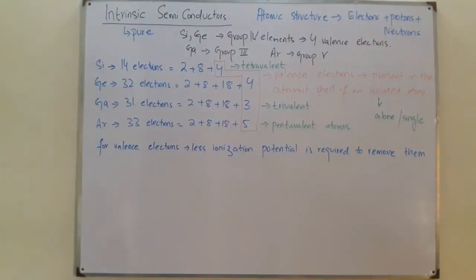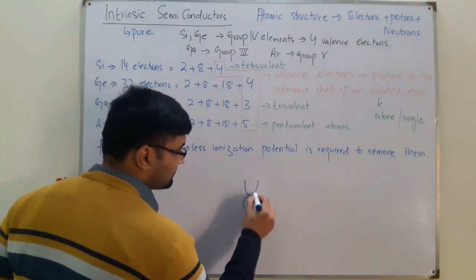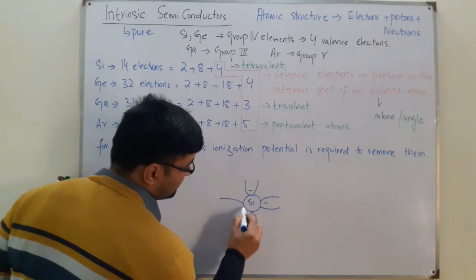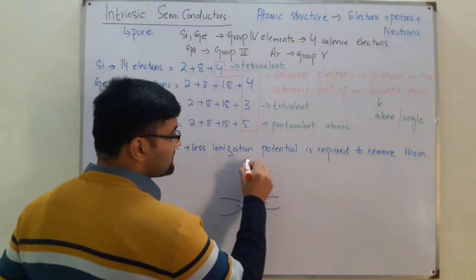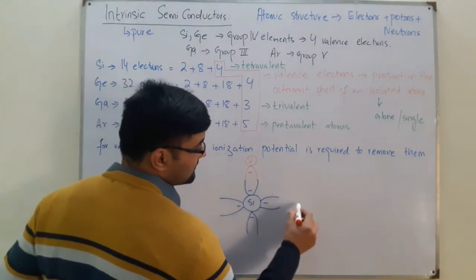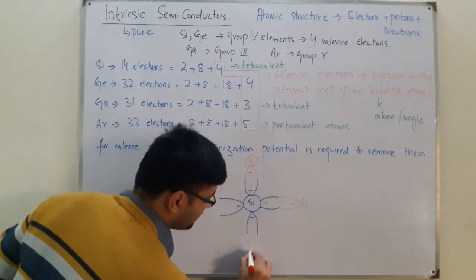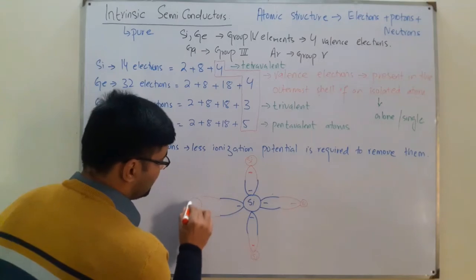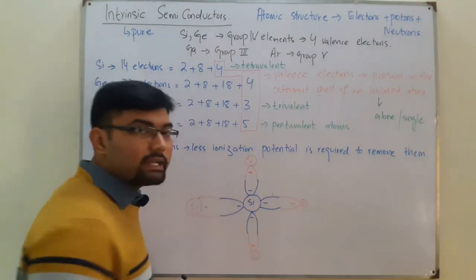Now let's look at the crystal structure. If we have a silicon atom — represented here by its valence electrons only, so it has four electrons in the valence shell — another silicon atom comes and joins with this one from each side. To attain the noble gas configuration, it needs eight electrons in the valence shell, and it has gotten eight electrons in its valence shell through this sharing.